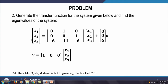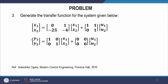Now we come to Problem 3: generate the transfer function for a system with two inputs u1 and u2. Earlier we had only one input, but now we have two inputs. When we have two inputs and two outputs y1 and y2, there will be four transfer functions: Y1/U1, Y2/U1, Y1/U2, and Y2/U2.